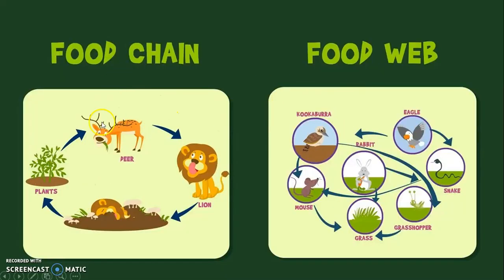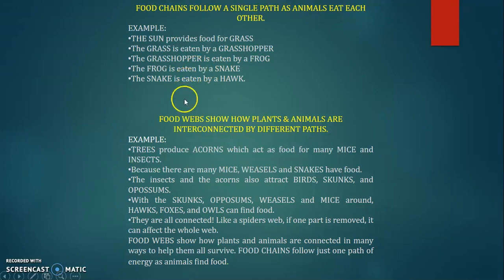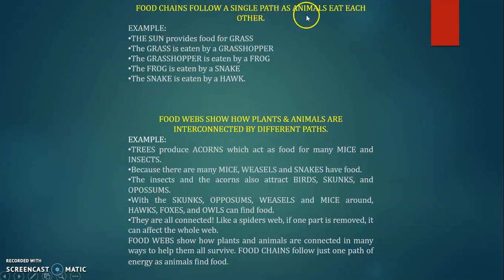This diagram shows the food chain — green plants, deer, lion — and this shows the food web with its interconnections. Food chain follows a single path as animals eat each other: the sun provides food for grass, grass is eaten by grasshopper, grasshopper eaten by frog, frog eaten by snake, and snake by hawk. In food web, plants and animals are interconnected in many ways — food web relates to interconnection, while food chain follows a single linear path.